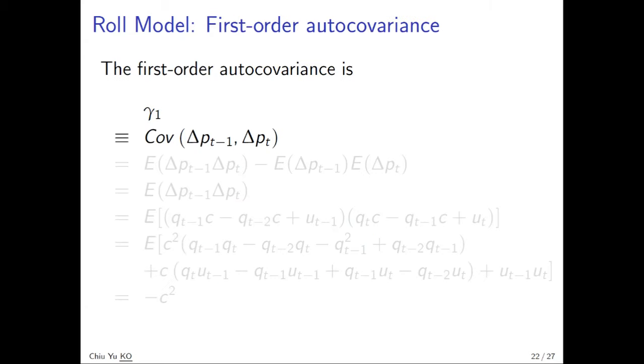Now we want to show gamma one is equal to negative C squared. How do we do? Actually similar, use the brute force method. It's very trivial, but we need some math. So gamma one by definition is covariance of its first differenced price and its lag. So it's equal to expected value of the product minus product of their own expectation. And this second term is equal to zero because expected value of price change is zero.